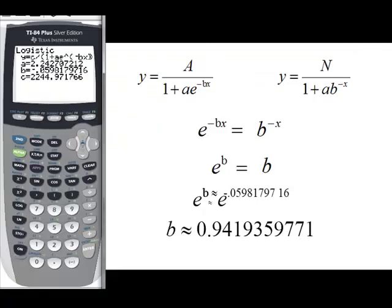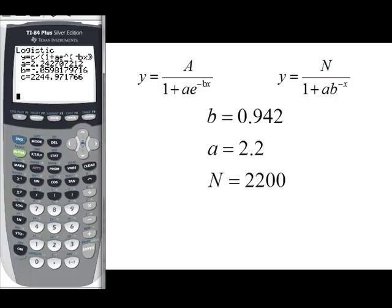We're going to take our b, and we're going to round it off to 0.942. We're going to take our a, the same a we get from the calculator, round it off to 2.2.